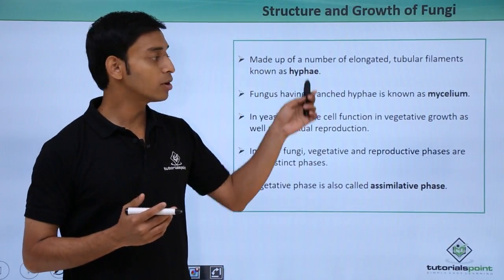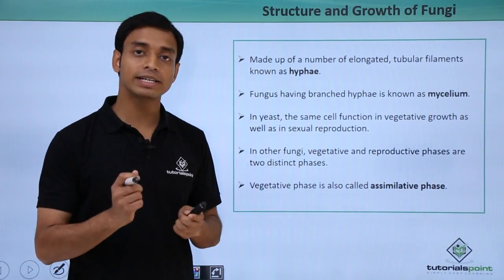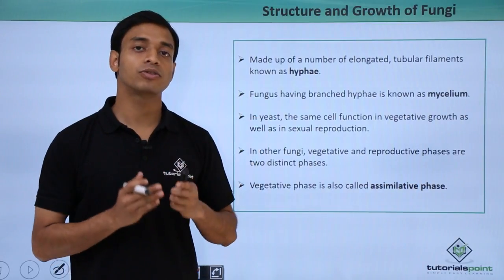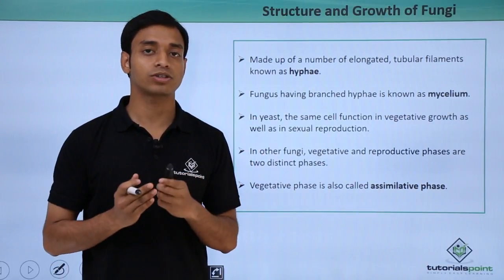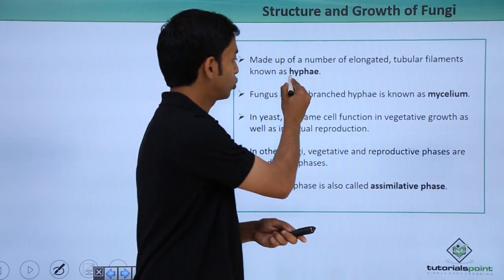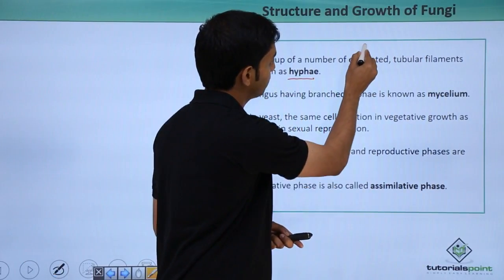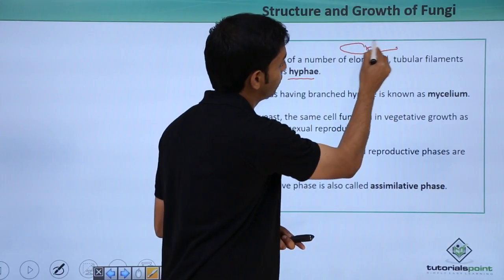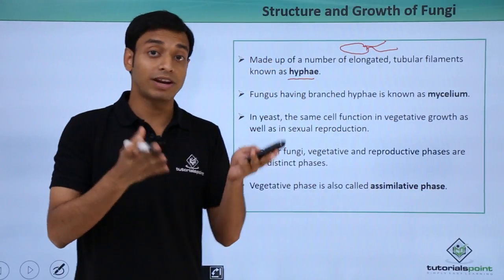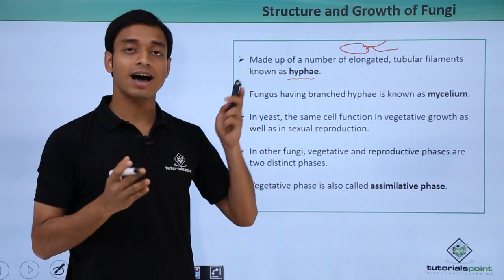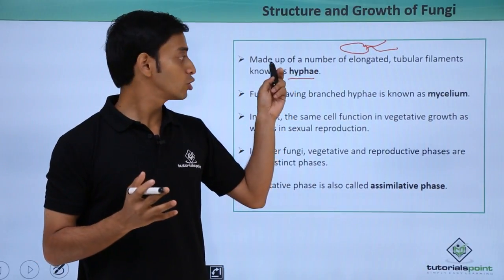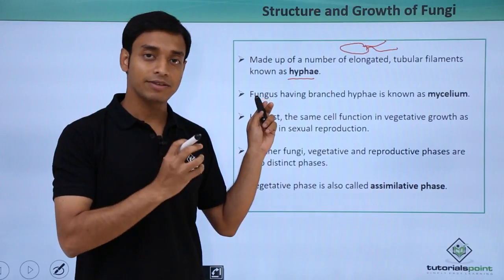Fungi have a number of elongated tubular filament-type structures, and these elongated filament-type structures have been given the name hyphae. So basically, a fungus has filament-like structures — similar to flagella — and these are termed hyphae.